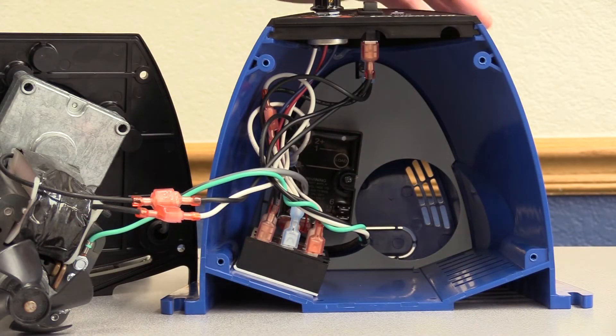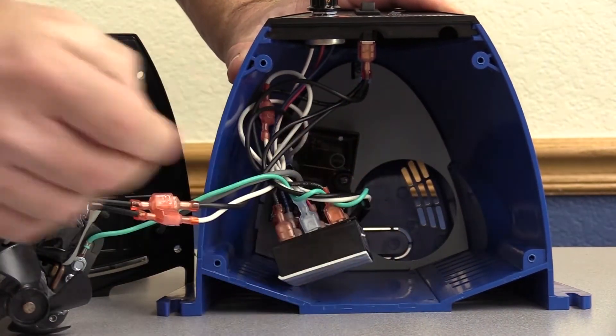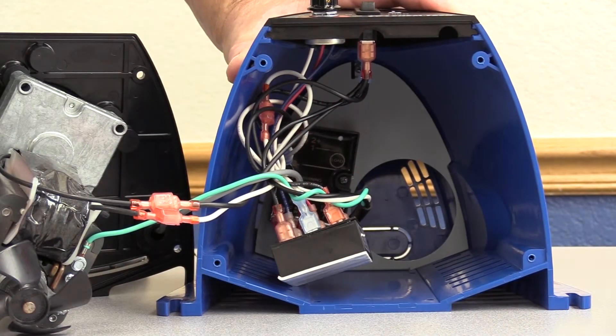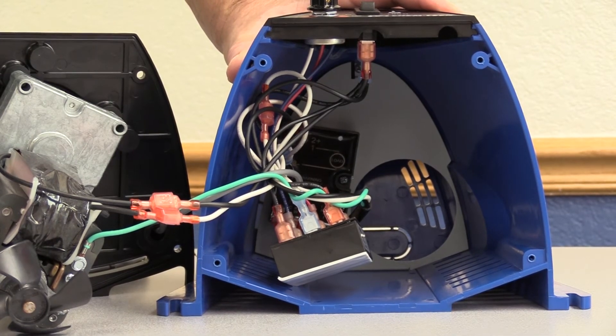To change the timer on the bottom of the housing, loosen the old timer module from the bottom of the housing. Make sure to scrape any remaining tape as this is necessary to make a good ground.